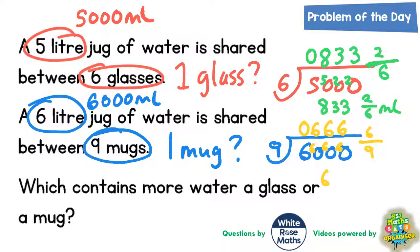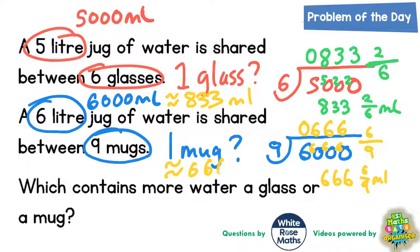So the final answer: one glass contains eight hundred and thirty-three millilitres, and one mug is approximately six hundred and sixty-six millilitres. We don't really need to look at the fractional remainders as they won't make much difference to the final answer. Which contains more water — a glass or a mug? Clearly the glass, because eight hundred and thirty-three is more than six hundred and sixty-six. Final answer: a glass.